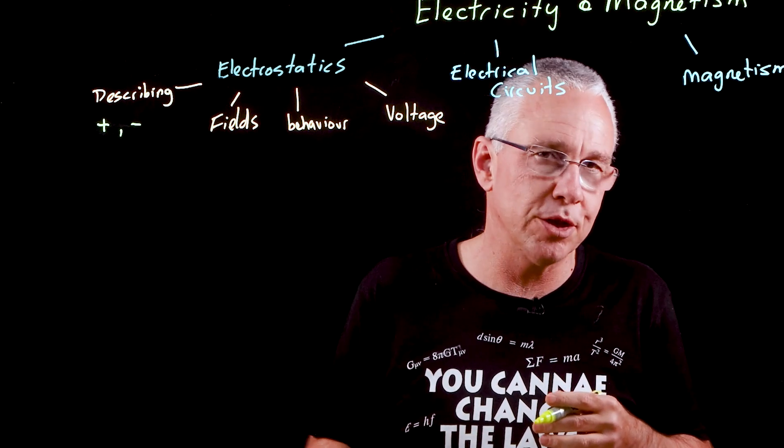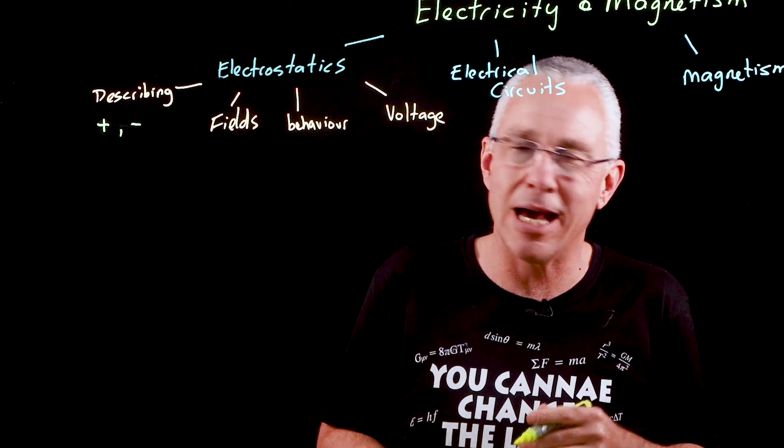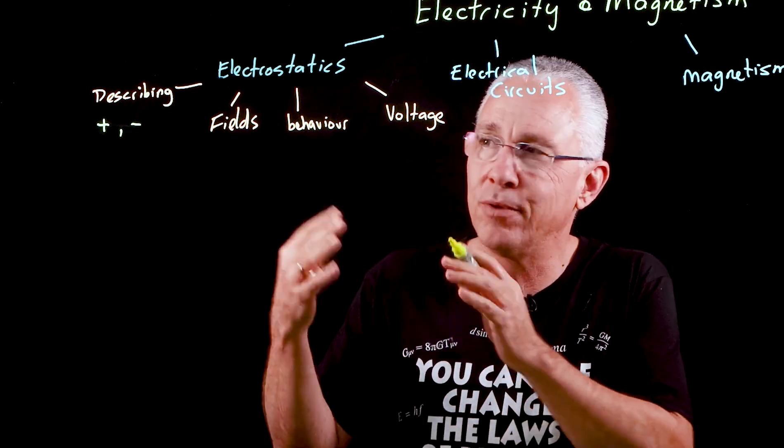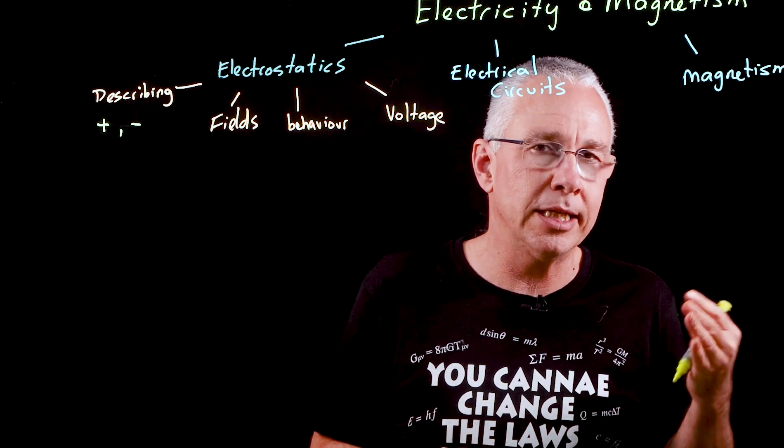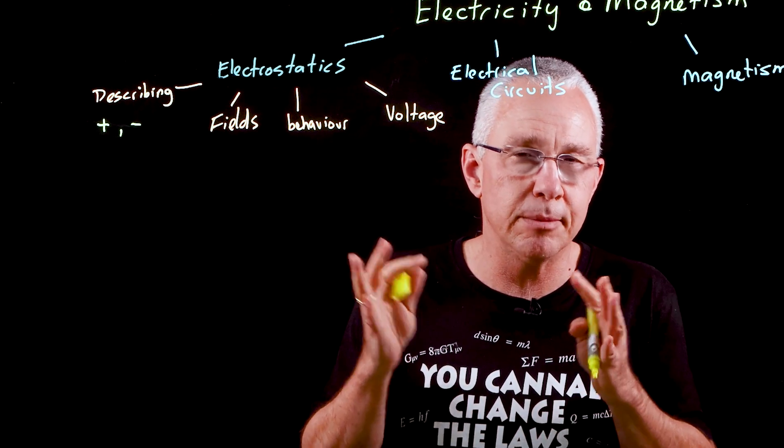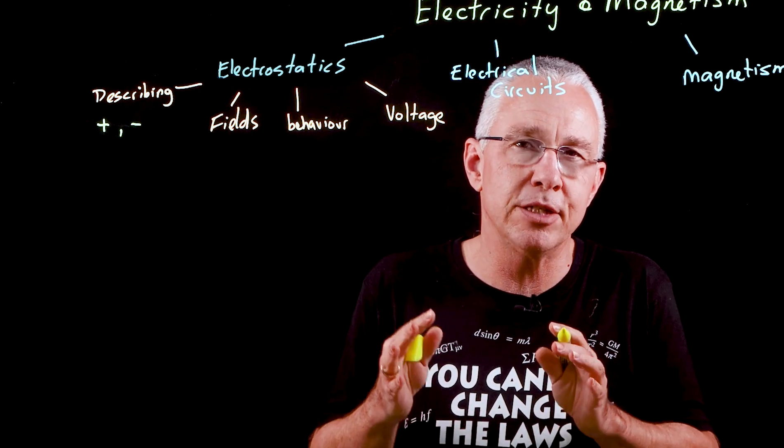The reason why they're called positive and negative is a matter of history—I'll get you to look that up. The reason behind the idea of a charge is that protons are positive and electrons are negative in our simplified model of the atom.